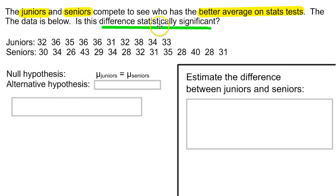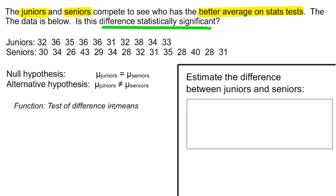The alternative, then, is that they are different. This difference is statistically significant, not that juniors is significantly more, for example. So, in this case, it's just a simple not equals. Now, when we want to actually perform this hypothesis test in our calculator, we are going to want to use the test of difference in means. And that's something that you can find in StatKey.